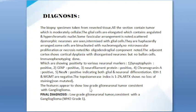Immunophenotyping was performed, showing positivity to various neuronal markers: synaptophysin positive, GFAP positive, neurofilament protein positive, chromogranin A positive, NeuN positive — indicating both glial and neuronal differentiation. IDH1 and MGMT are negative. The Ki-67 proliferation index is 1 to 2 percent. ATRX shows no loss of staining. The features indicate a low-grade glioneuronal tumor consistent with ganglioglioma. Final diagnosis: low-grade glioneuronal tumor consistent with ganglioglioma, WHO Grade 1.